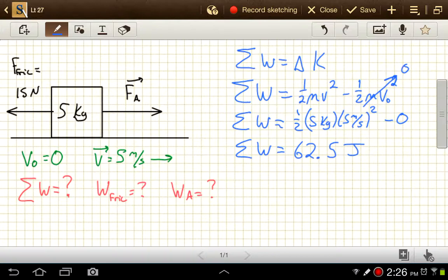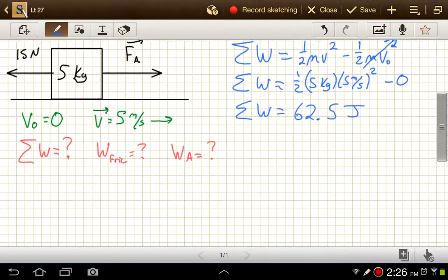We can say that the total of the work done by A, which we can't calculate directly since that force isn't given to us, and the work done by this 15 newton force, which we can calculate, those have to be equal to 62.5 when we add them together, and we can use that to solve for the work done by force A.